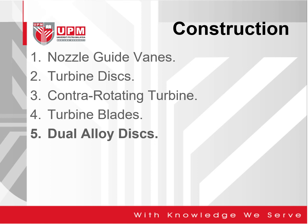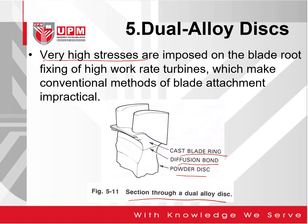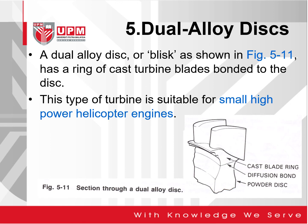Now we look into the last part of the construction, which is the dual alloy disk. Very high stresses are imposed on the blade root fixing of high work rate turbines, which make conventional methods of attachment impractical. That's why the De Laval method as well as the BMW method are no longer used. Figure 511 shows a section through a dual alloy disk, where we have a cast blade ring, diffusion bond, and a powder disk. A dual alloy disk, also known as a BLISC, has a ring of cast turbine blades bonded to the disk. This type of turbine is suitable for small high power helicopter engines.